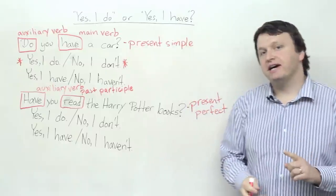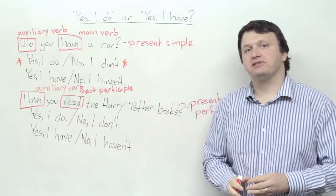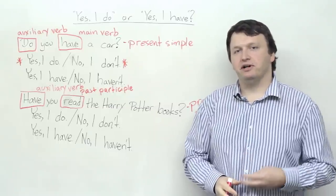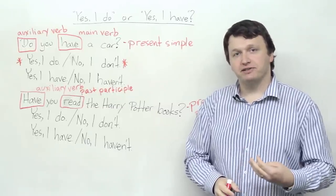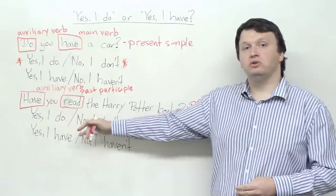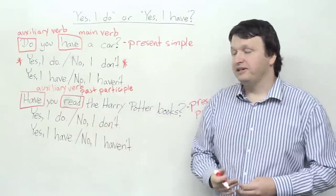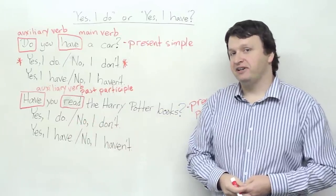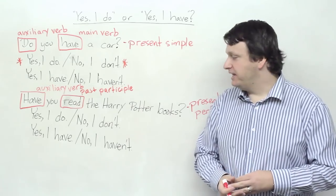So here you have a past participle, which we use with the present perfect, and here we have have, which is the auxiliary verb. Now, remember what I said, in yes, no questions, you always focus on the auxiliary verb for the response. So, here you have two possibilities. Yes, I do. No, I don't. Or, yes, I have. No, I haven't.